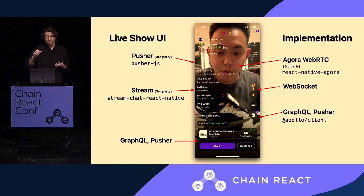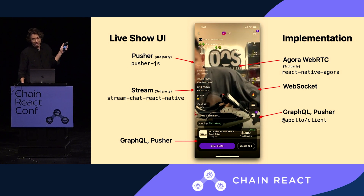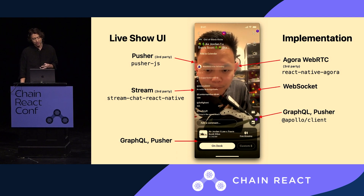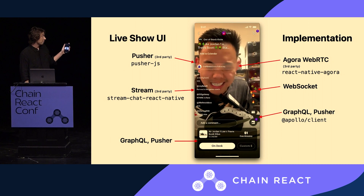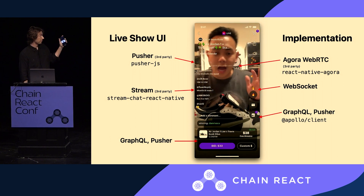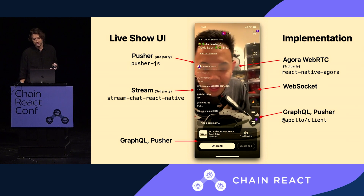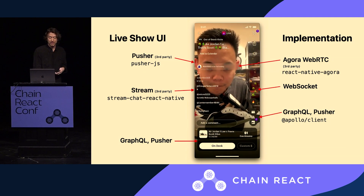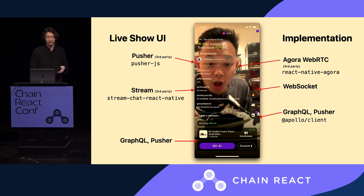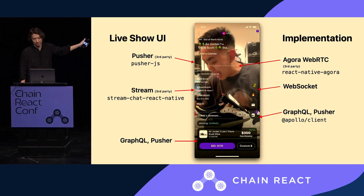Under the hood, these are the main packages we're using to power the different parts of the screen. Starting from the top left, we're using Pusher, a third-party WebSocket hosted provider, to handle all inbound messages to the client. Then we're using another third-party called Stream to do all of our chat. The video layer in the background is powered by Agora, handling all of the ultra-low latency broadcasts. The emoji reactions use a homegrown WebSocket server with a raw WebSocket connection on the front end. Everything else is GraphQL queries, and we also use Pusher to do client-side cache mutations — the bid coming in is actually Pusher sending messages and modifying the cache payload from the GraphQL query.